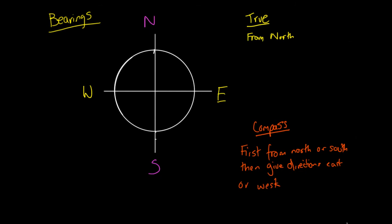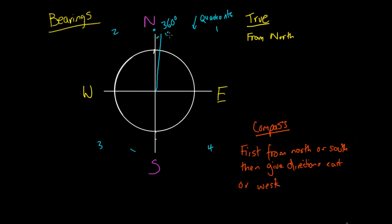Let's look at an angle and see what it is as a true bearing and then as a compass bearing. We start with a north reference point. A circle always has 360 degrees. Every section of the circle we call quadrants — quadrant one, quadrant two, quadrant three, and quadrant four. When we go all the way around the circle and get back to the start, we've gone 360 degrees.